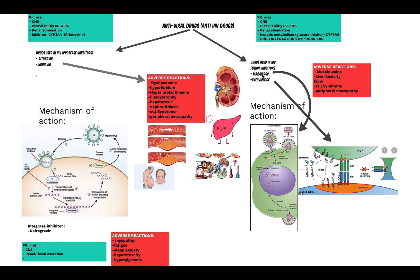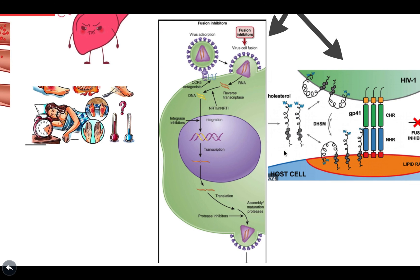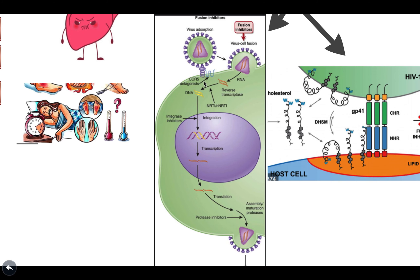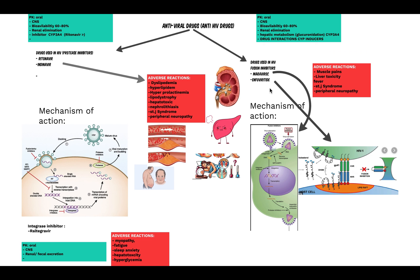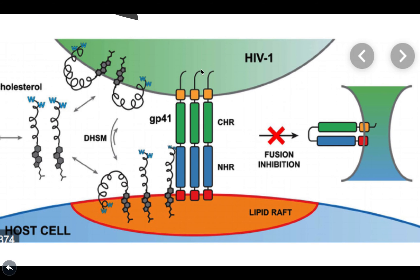Fusion inhibitors have two main drugs with different mechanisms: maraviroc and enfuvirtide. Maraviroc works by blocking the CCR5 receptor. The virus fuses to the host cell via CCR5 receptors, so by blocking CCR5, the virus cannot uncoat and deliver its RNA into the host cell. Enfuvirtide, on the other hand, works by blocking GP41.